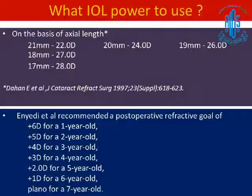Regarding which IOL power to use, various recommendations have been made over the past two to three decades. Dhan et al. suggested IOL power based on axial length — for example, 21 mm axial length, use 22 diopters — though these are very generalized. Subsequently, NAD et al. recommended targets based on postoperative refractive goal: for a 1-year-old child, target +6 diopters; 2-year-old, +5 diopters; 3-year-old, +4 diopters; and so on.